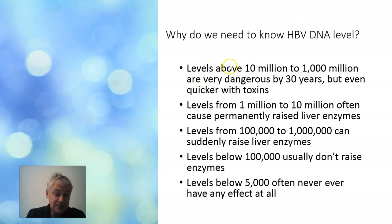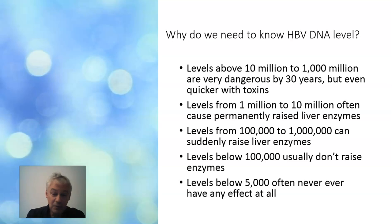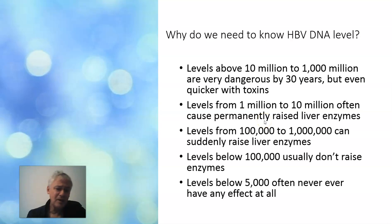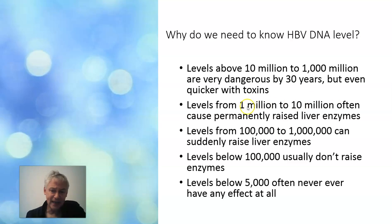At that high level, it's usually hepatitis B e antigen positive, and it's a very good idea to get on medicine. Drinking alcohol or being obese with that level is a serious concern. If the level is from one million to ten million, it can often cause permanently slightly high ALT and AST readings, and this can be damaging the liver all by itself.